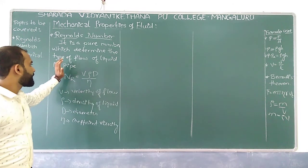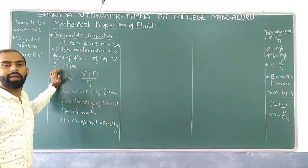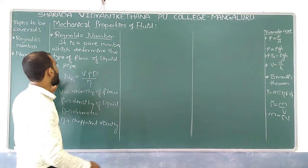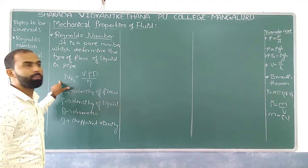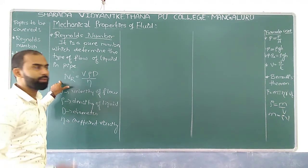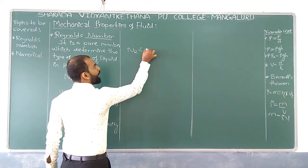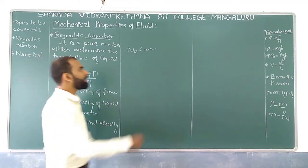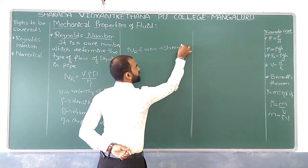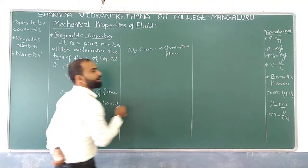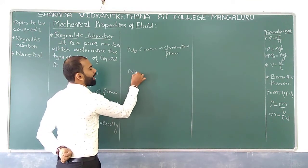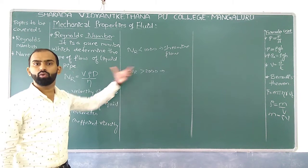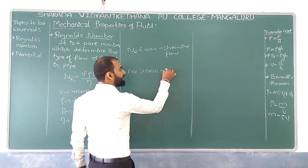By having this particular relation of Reynolds number, the value is such that if NR is less than 1000, we can say that the fluid flowing in a particular tube is in streamline flow. And similarly, if NR is greater than 2000, then we can say the fluid flow is turbulent.